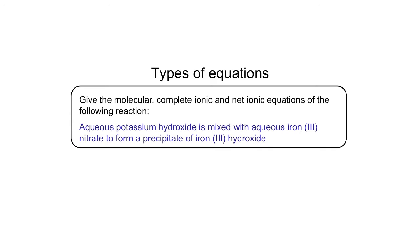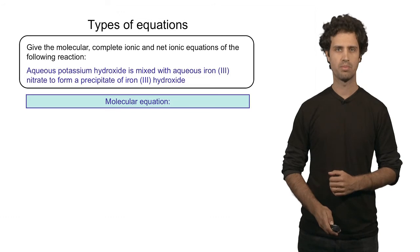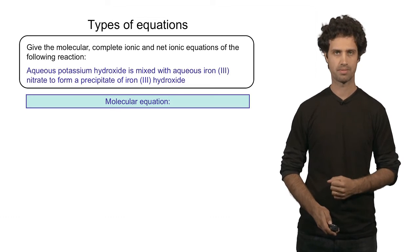Let's put this into practice. Let's look at the following reaction and write down the molecular equation, the complete ionic equation, and the net ionic equation. In this reaction we have two solutions: one is potassium hydroxide and the other is iron 3 nitrate, and they form a precipitate — iron 3 hydroxide.